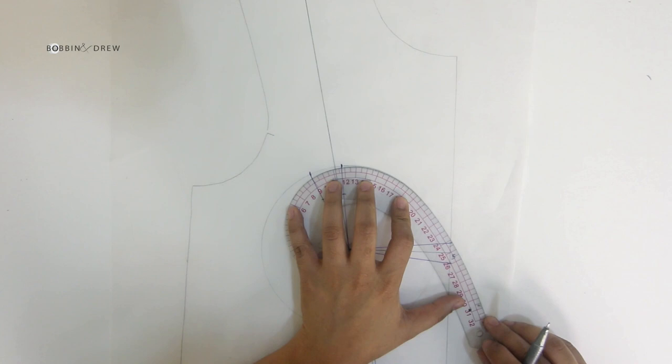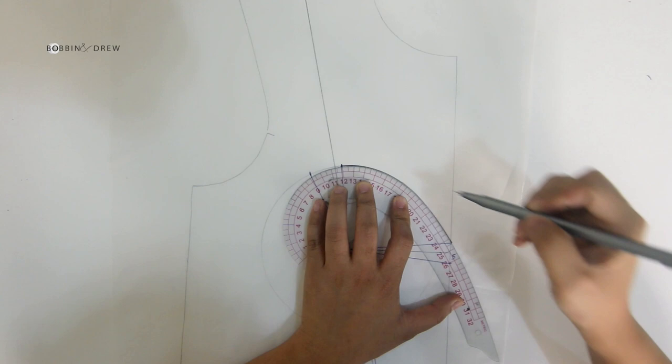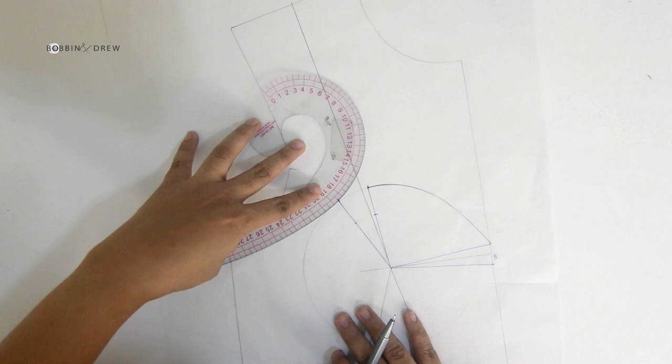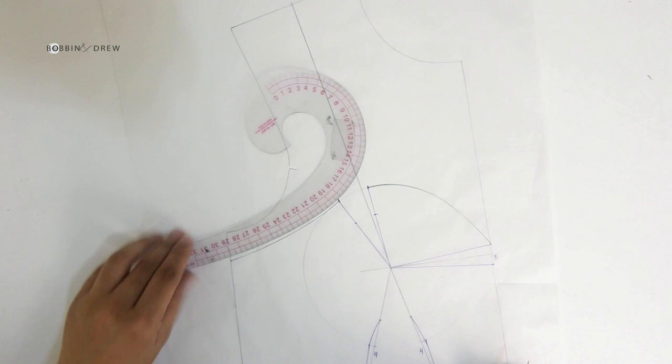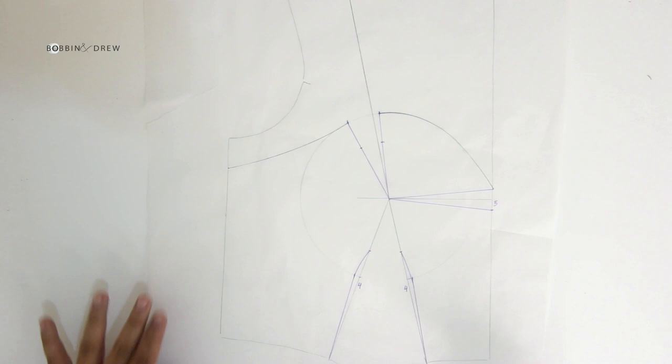Now that we have the major contour guides, we can now draw in our style line. I want to be conservative on this design, so not too much cleavage here. How low you want is a personal preference, of course, of the designer or of the client.